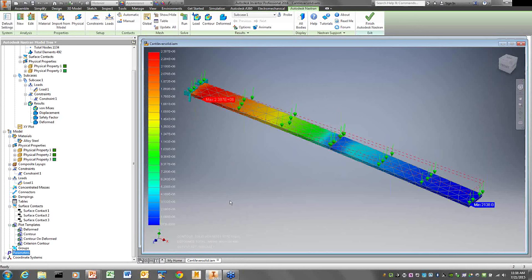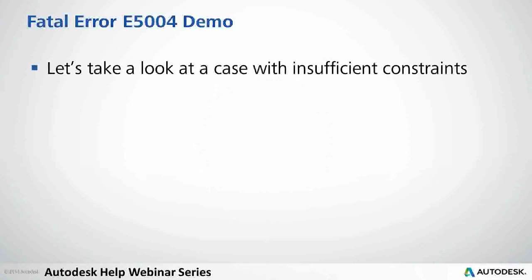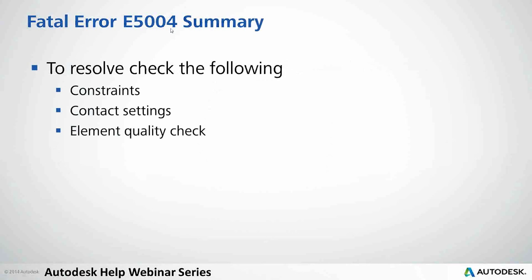You can pick a constraint point yourself using inertia relief 'on,' or use 'auto' which just finds a point and constrains it for you. It's really all arbitrary — you get the same answers both ways. To resolve error 5004: check constraints first, then check that constraints are properly defined in all degrees of freedom, and then check your contact settings — mostly the activation distance.